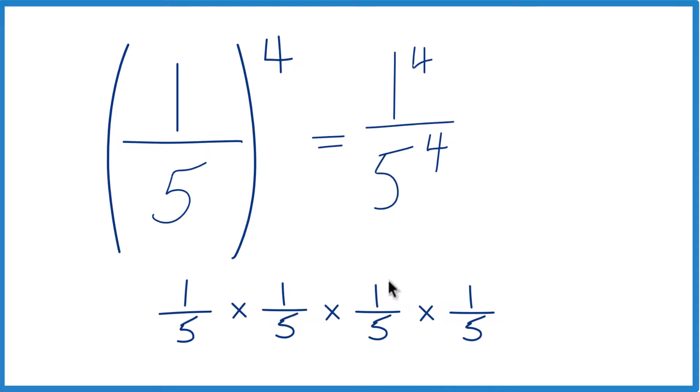We have one times one times one times one. That's one to the fourth. Five times five times five times five. That's five to the fourth. So you can see they're the same.